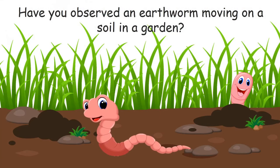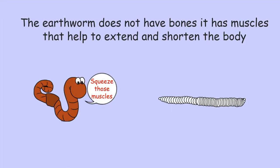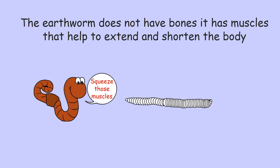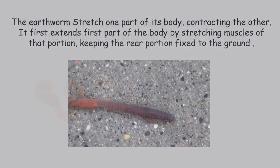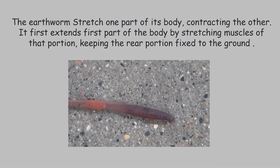Have you observed an earthworm moving on soil in a garden? The body of an earthworm is made up of many rings joined end to end. But it does not have bones. It has muscles that help to extend and shorten the body. The earthworm stretches one part of its body while contracting the other.